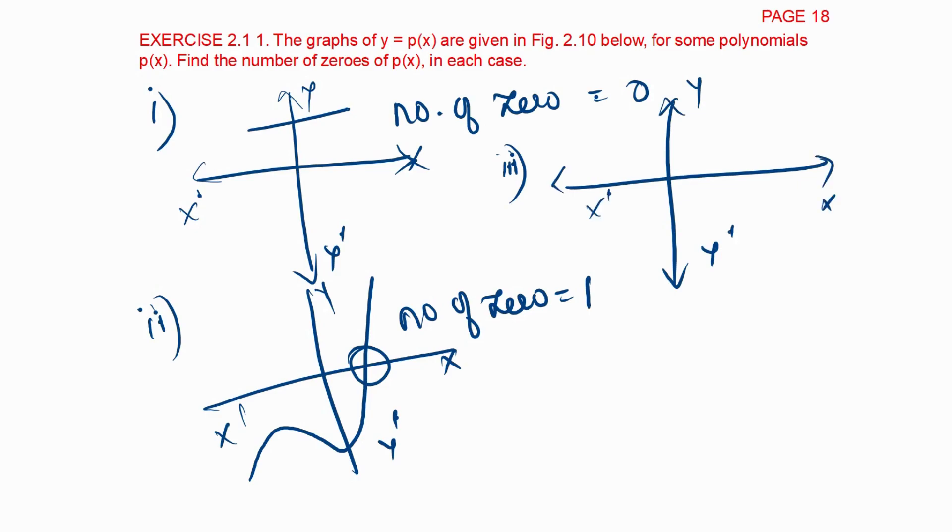For the third question, the plot is touching the x-axis at three points, so the number of zeros is 3.